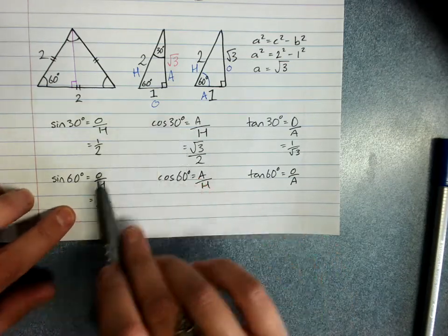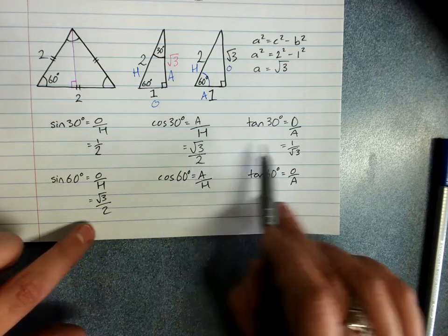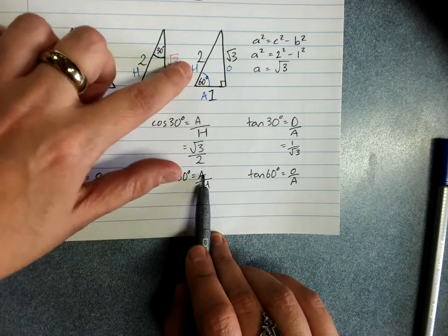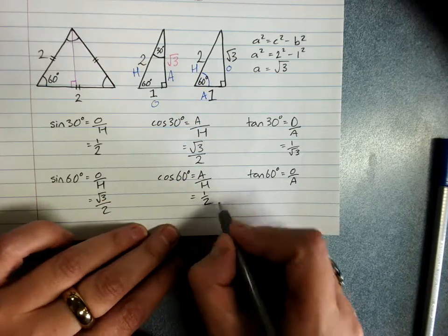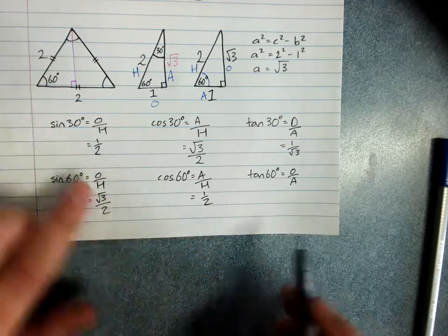Have a look. Cos of 30 and sine of 60 are the same. Cos of 60 degrees, adjacent over hypotenuse, 1 over 2. Cos of 60, sine of 30, and sine of 30 are the same.